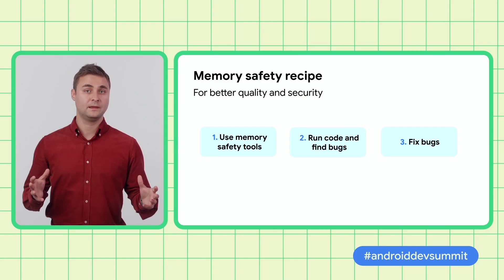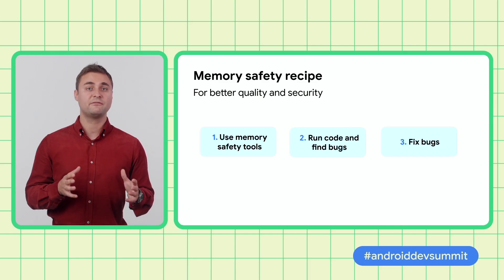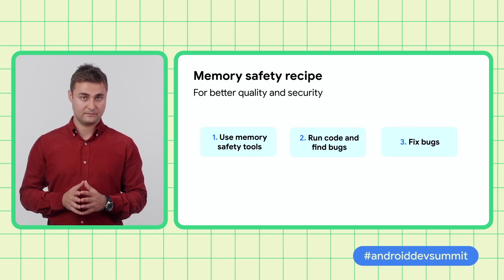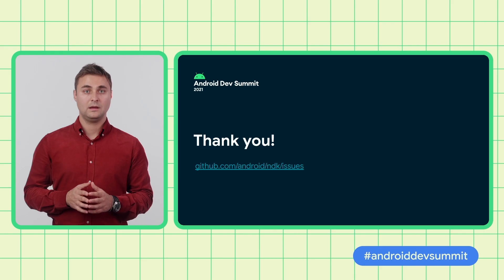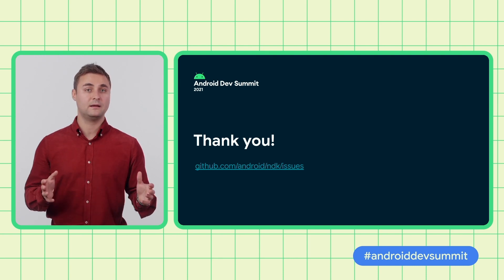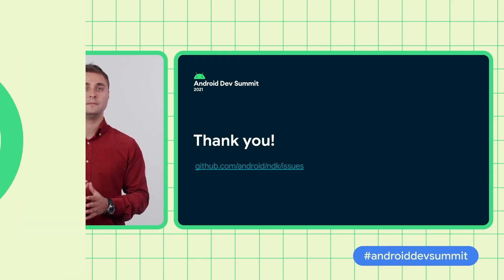To quickly recap what was discussed in this presentation: the Android memory safety tools detect memory bugs in your code base, and fixing them improves quality and security. The recipe for memory safety is: use memory safety tools, run your code and find bugs, fix those bugs. I look forward to developers using our tools and improving the quality and security of our ecosystem. If you encounter any issues or have any feedback, please reach out by filing a bug at the link provided below. Thank you for your time.